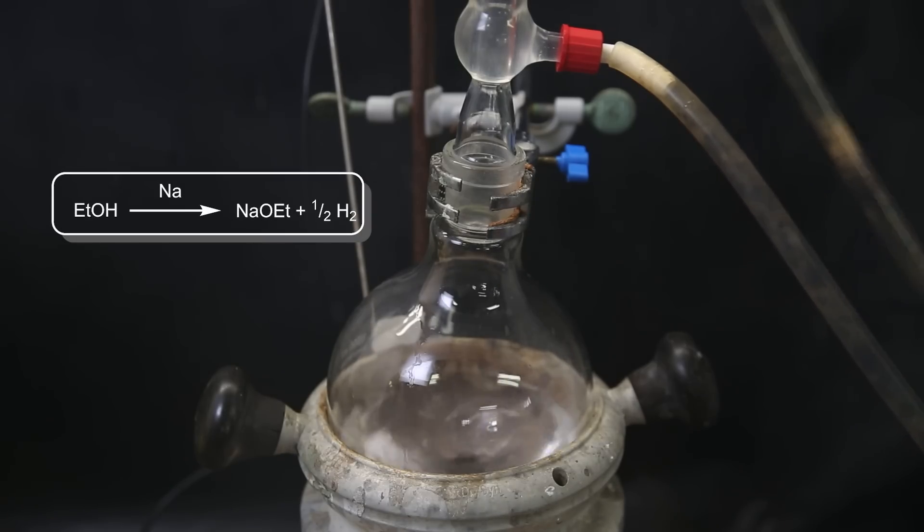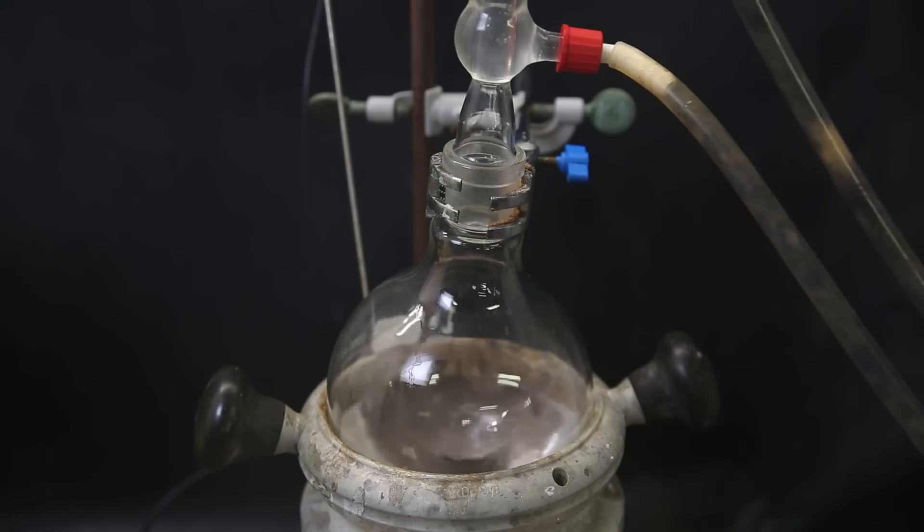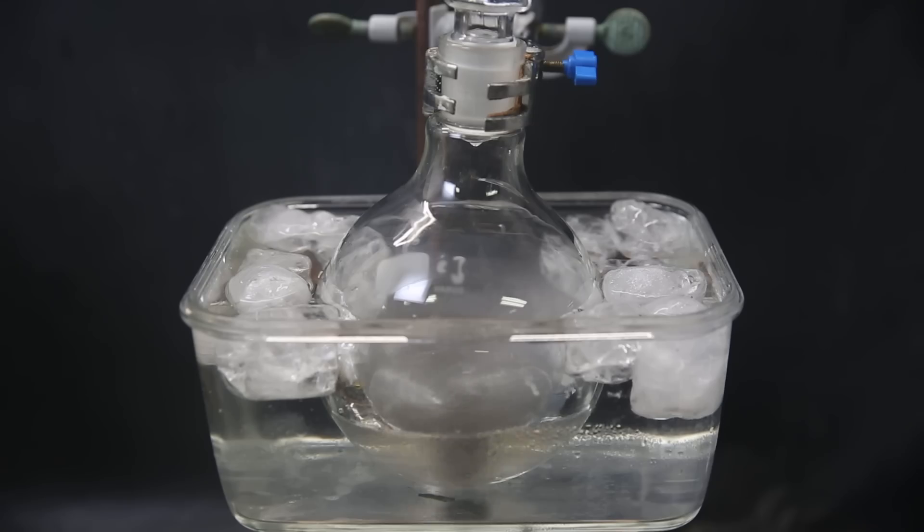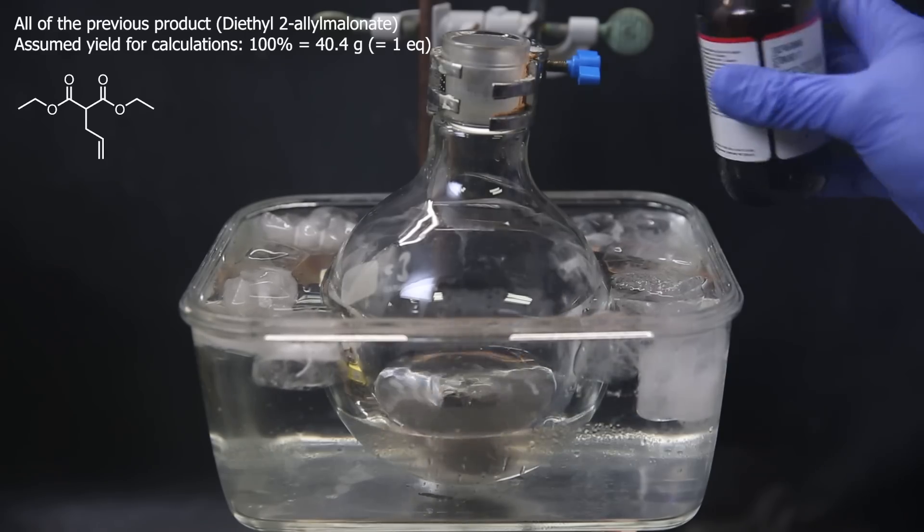In this reaction, the sodium reacts with ethanol to form sodium ethoxide, which is a strong base, and hydrogen, which floats away. When that's done, I set the flask in an ice bath to cool it down, and then add all of the previous product.